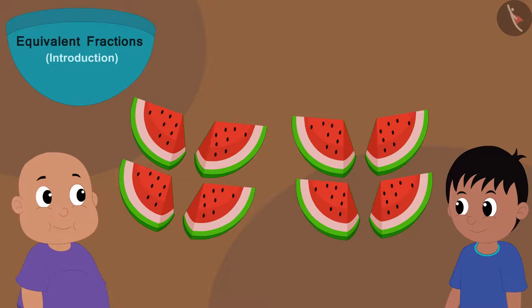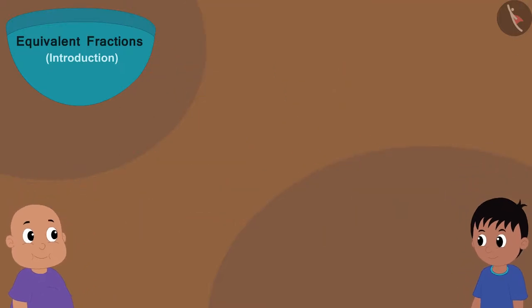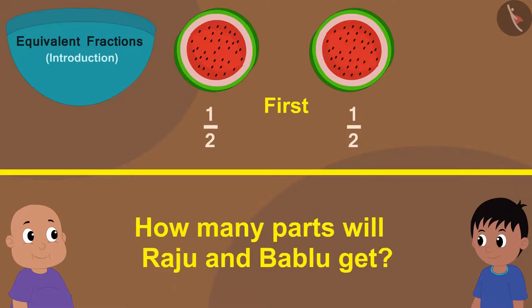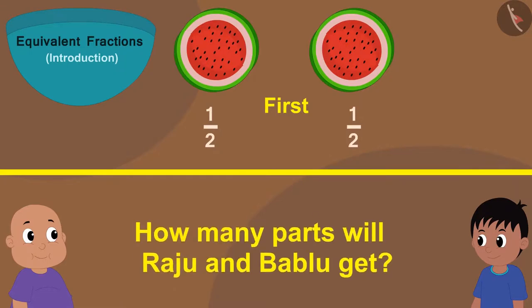And children, you can see, right? All these eight parts are exactly the same. Now, if they have to take as much watermelon as before, that is, half watermelon, how many parts will Raju and Bablu get?